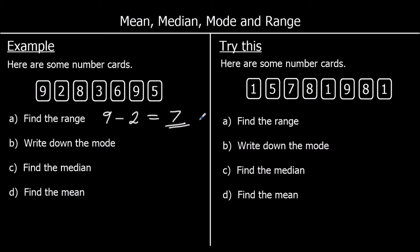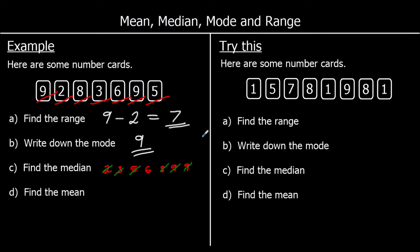The mode is the most common number — the number that appears most often. We've got two 9's, and we don't have two of any other number, so 9 is the mode. To find the median, that's the middle number, but we need to put the numbers in order first. So: 2, 3, 5, 6, 8, 9, 9. We can cross off from both sides — crossing off 3 from both sides — and we're left with 6 in the middle. So 6 is the median.